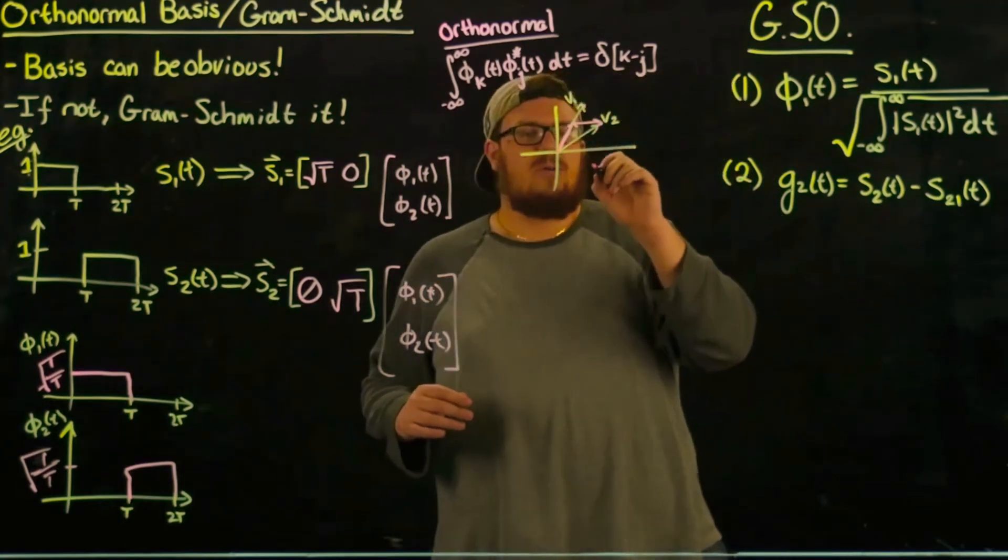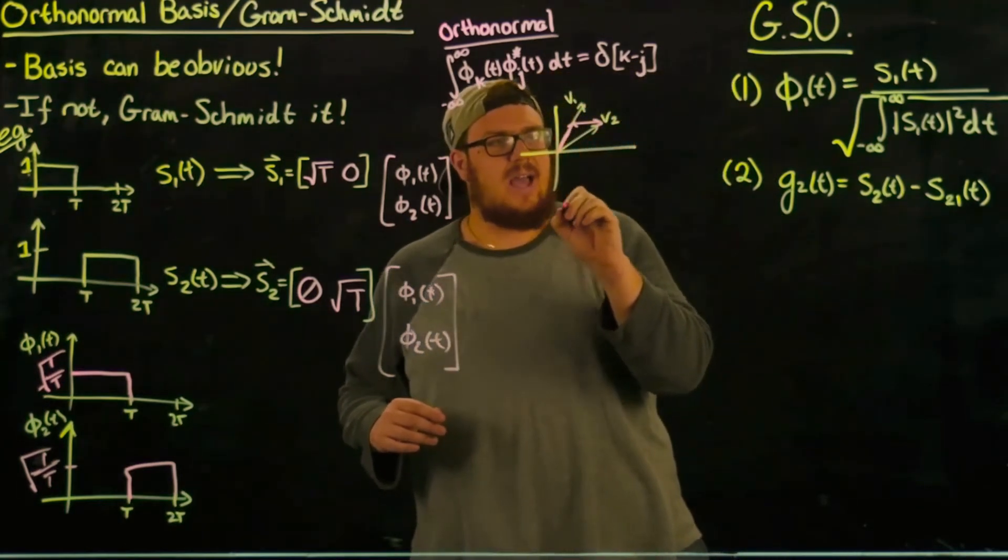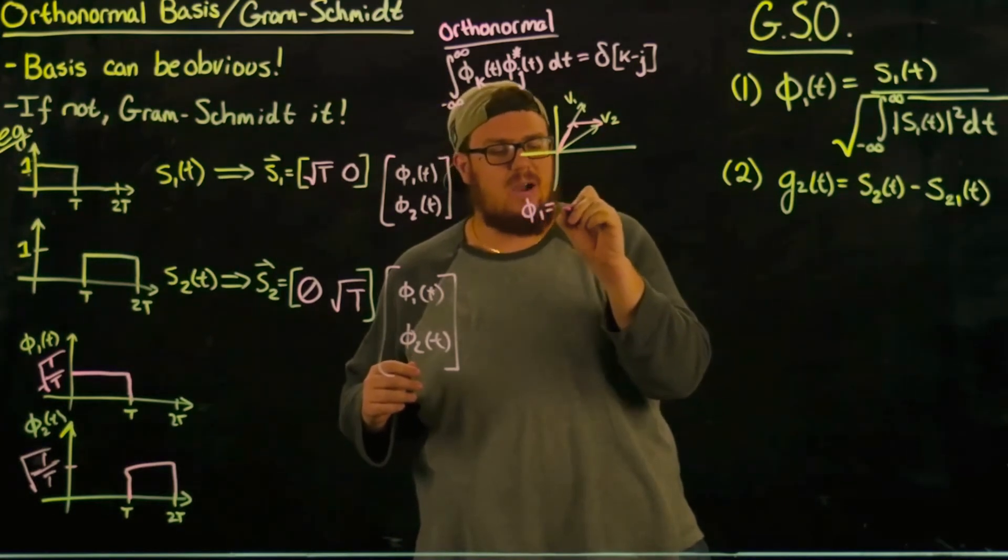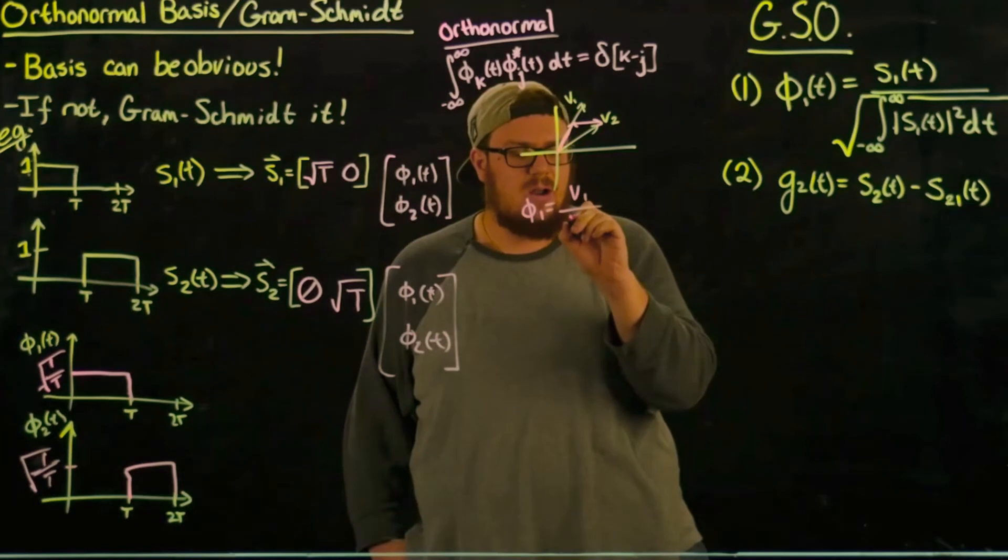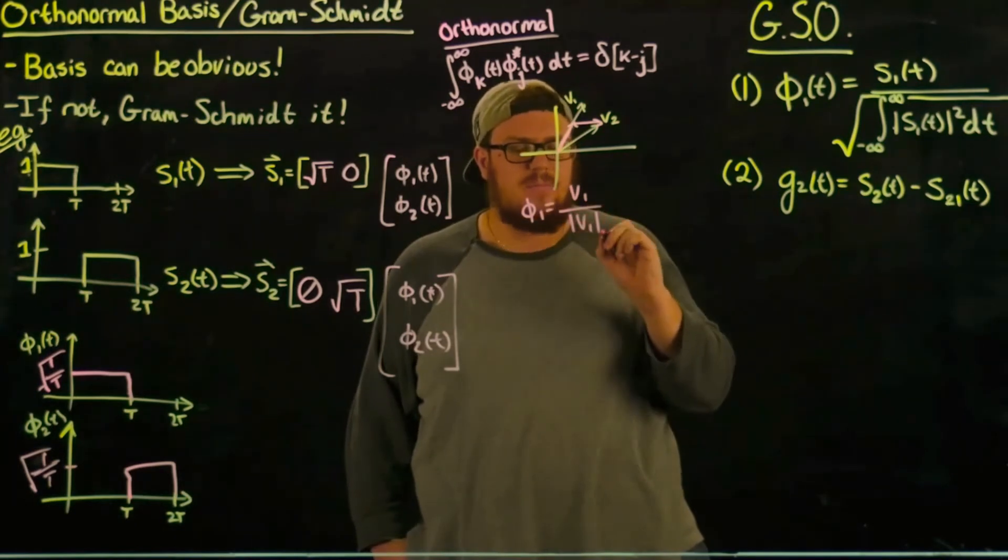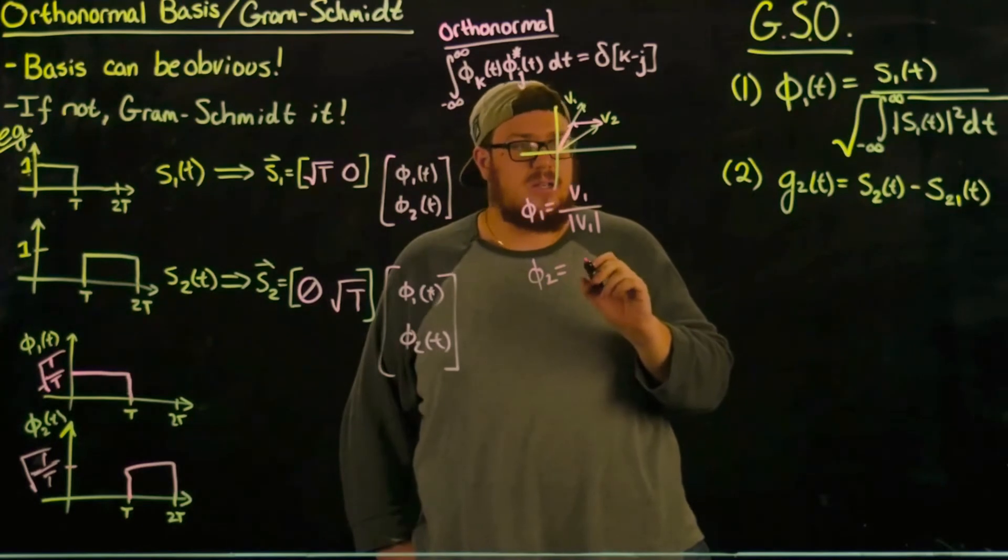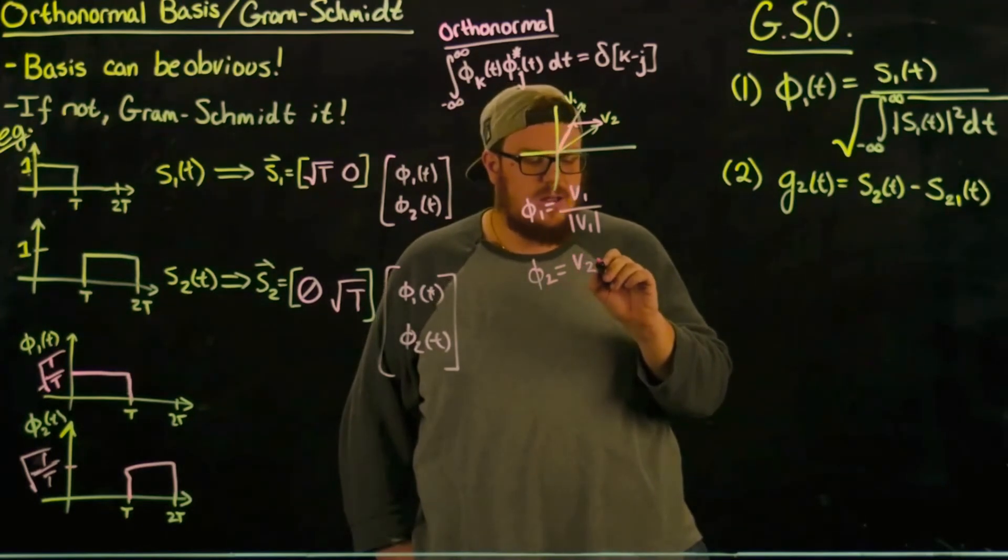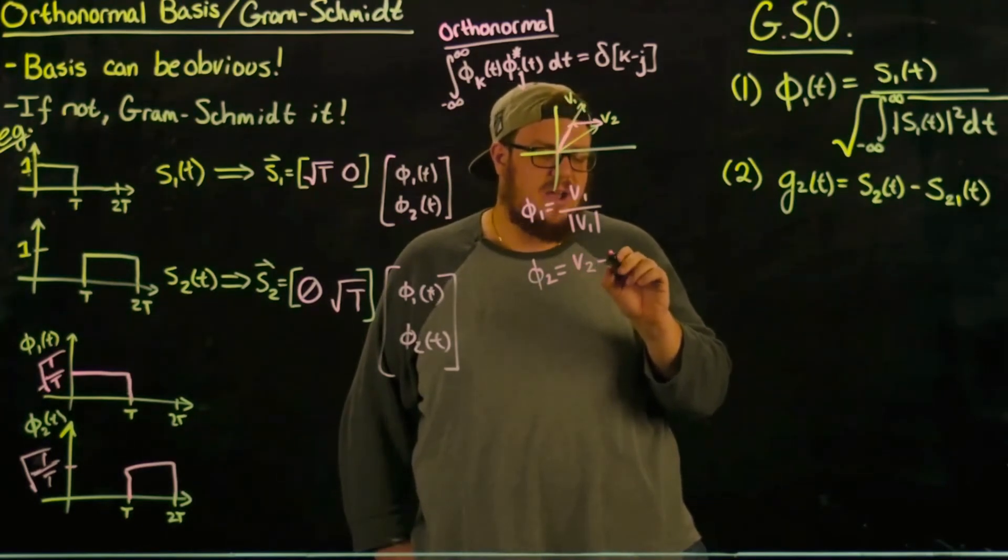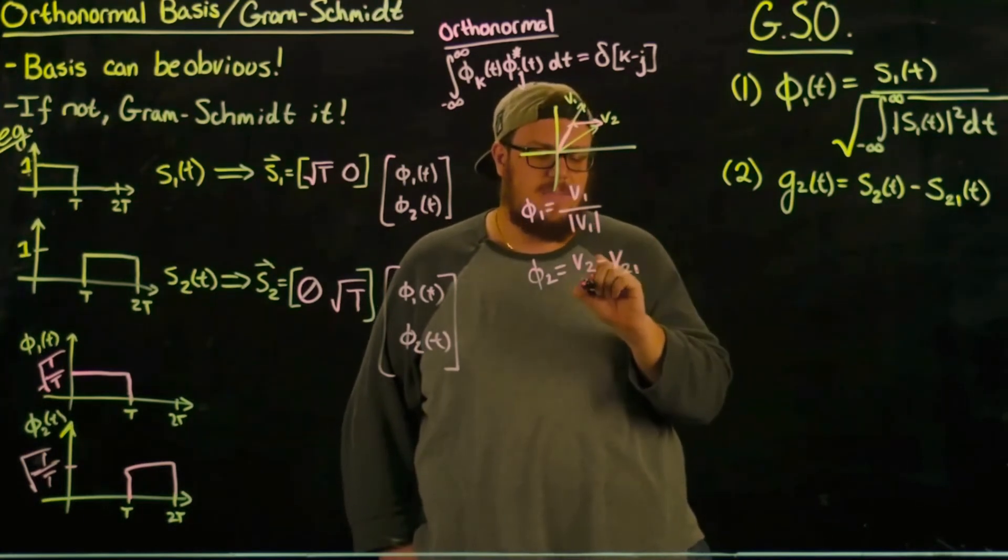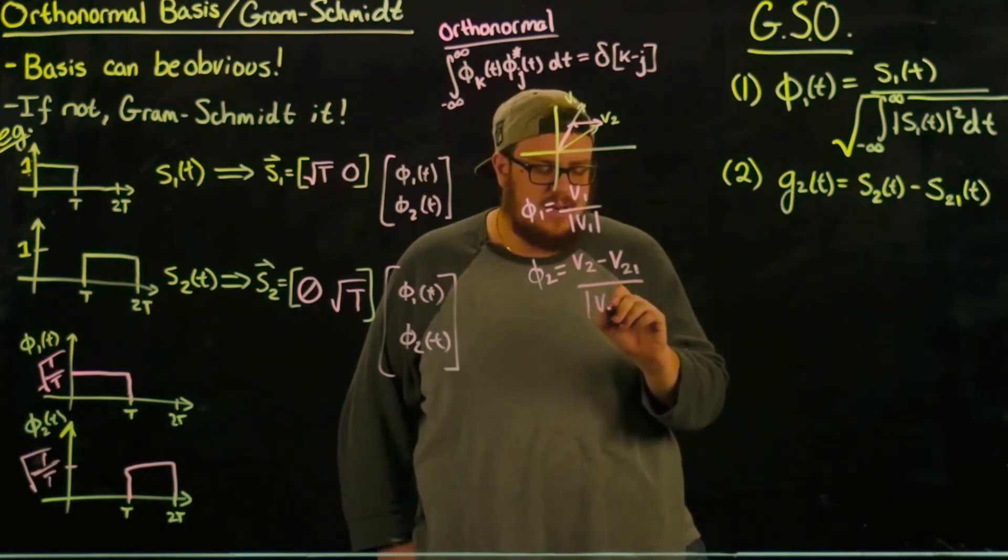And so what we're doing here is we're saying that we would call our first basis φ_1, we would call it v_1 over the magnitude of v_1, and then we would say φ_2 would equal vector two minus vector two projected onto vector one, divided by this magnitude.